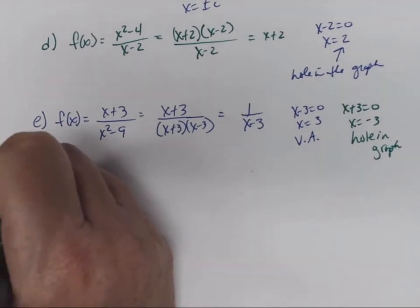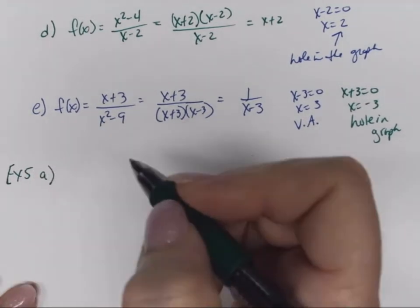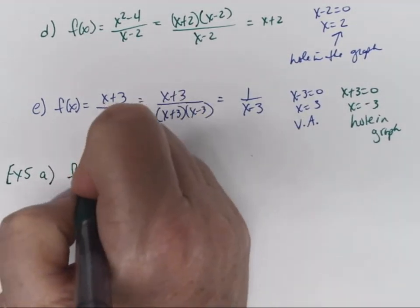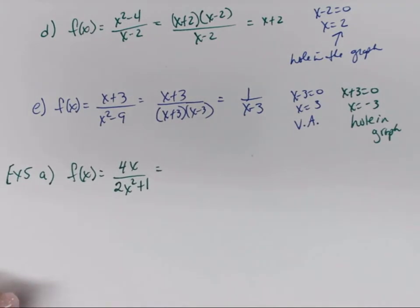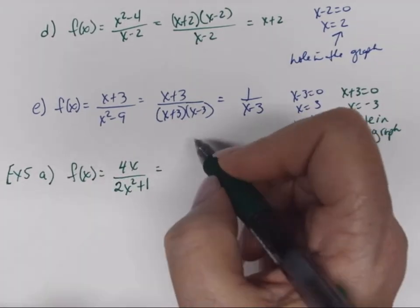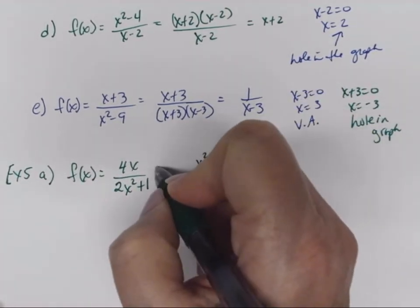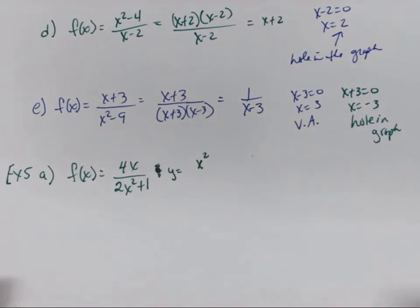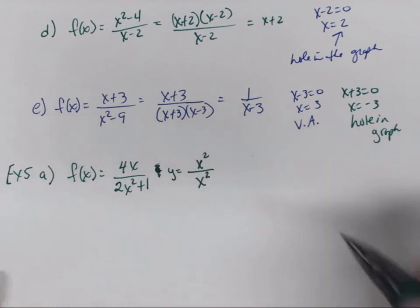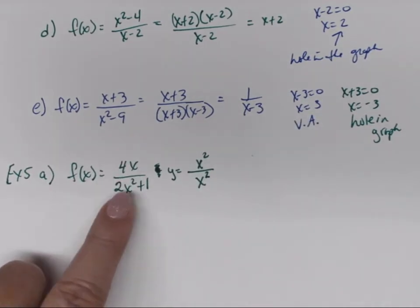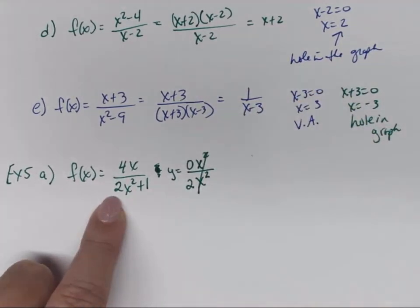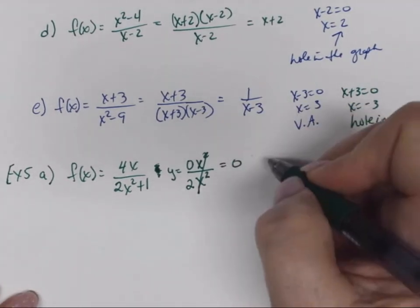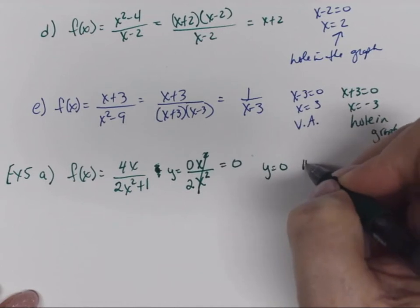Example 5, part A: f(x) = 4x/(2x²+1). The highest degree is x². We match: x² over x². How many x²'s on top? Zero. On the bottom? Two. So we get 0/2 = 0. The horizontal asymptote is y = 0.